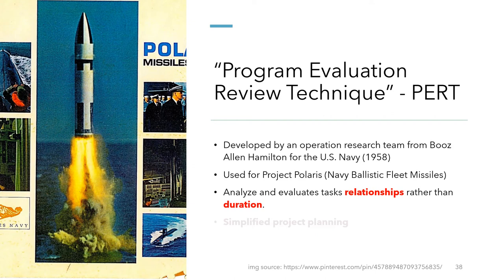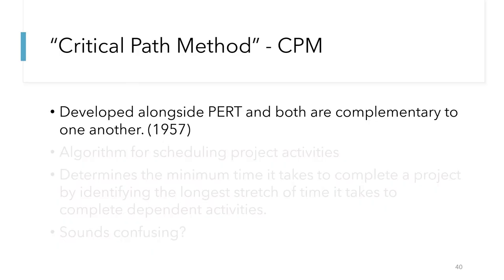The purpose of PERT is to look, analyze, and evaluate various tasks and their relationships with one another, rather than their durations. As a result, Project Polaris became much more simplified due to the implementation of PERT. Compared to looking at a Gantt chart or a work breakdown structure, PERT was much easier to interpret due to its visual simplicity, rather than compacting a lot of complex data into an aggregate of rows and columns.